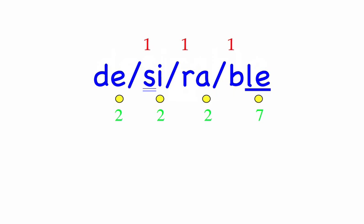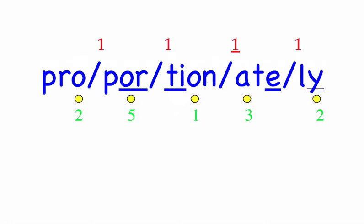Proportionately. Each gave proportionately according to his income. Five syllables. First syllable: Pro, three sounds, P-R-O. Por, two sounds, P-Or. Sean, three sounds, Sh-A-N. Ate, two sounds, A-T. Lee, two sounds, L-E. Pro-por-tion-ate-ly. Mark the word. Proportionately.